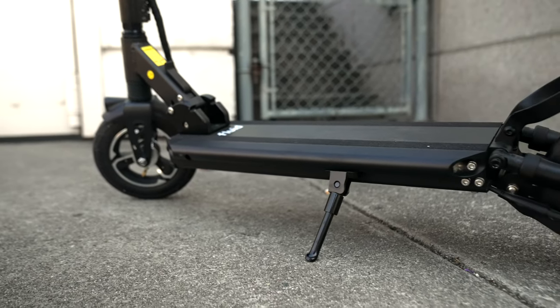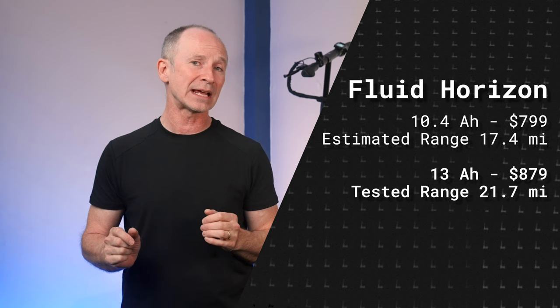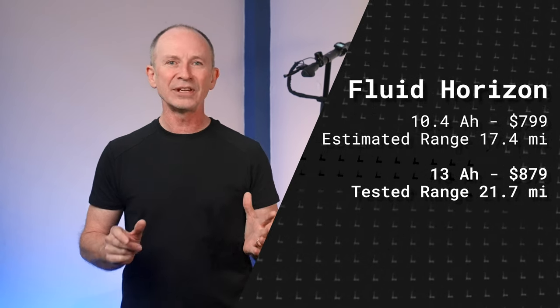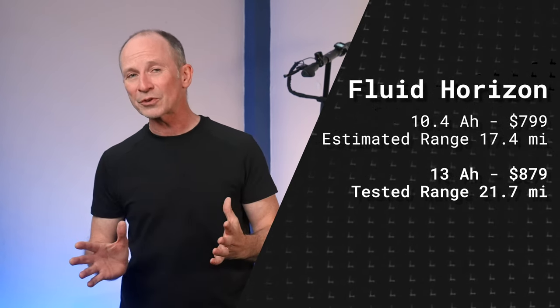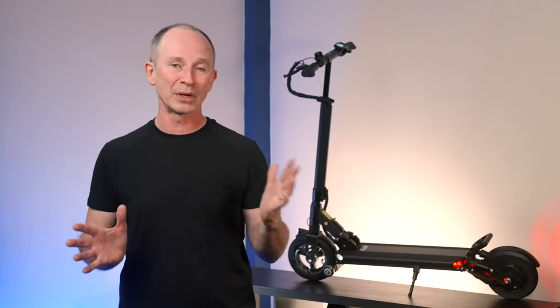The Fluid Horizon still comes in two versions. The less expensive version with a smaller 10.4Ah battery for $799 or the big 13Ah version for $879. The difference is you'll get 25% more miles for 10% more dollars if you go for the big one, which is why we like the big one better.